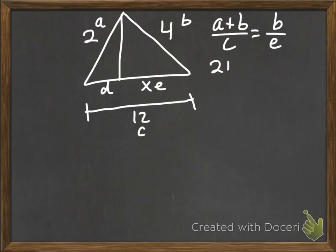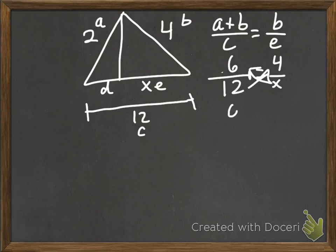So now we're just going to plug in. And so we get 2 plus 4 divided by 12 equals 4 divided by x. Let's simplify that 2 plus 4. 2 plus 4 is 6. Now we can cross multiply. So we get 6x equals 48, divide by 6, and we get x equals 8 as our final answer there.